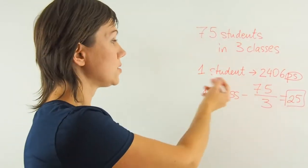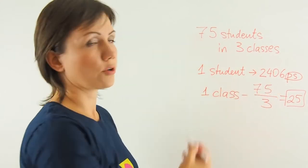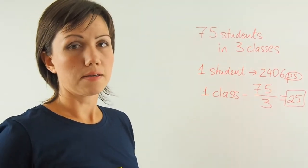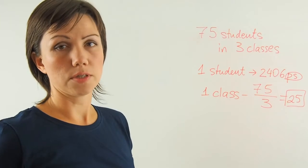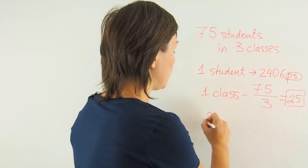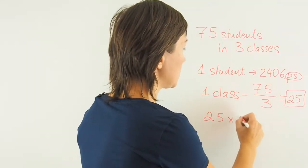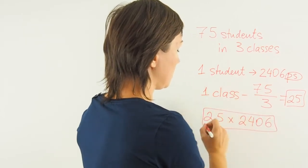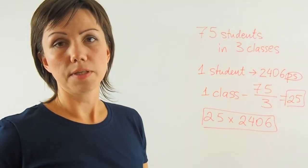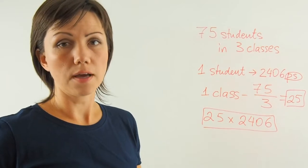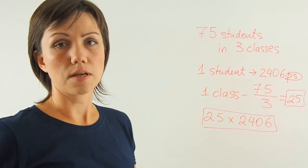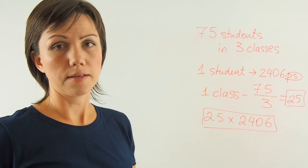Then one student requires 2,406 popsicle sticks. Then how many do 25 students need? 25 times 2,406. You can do vertical multiplication in this case if you do not have a calculator on you. If you have a calculator you can just plug it into the calculator and get the answer.